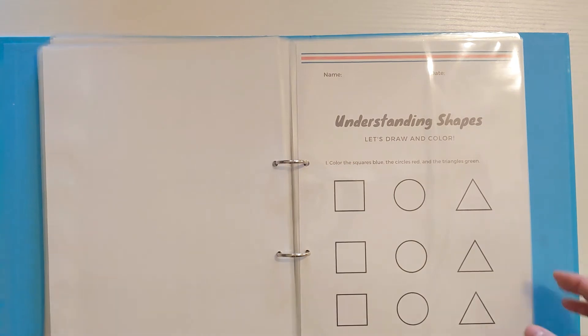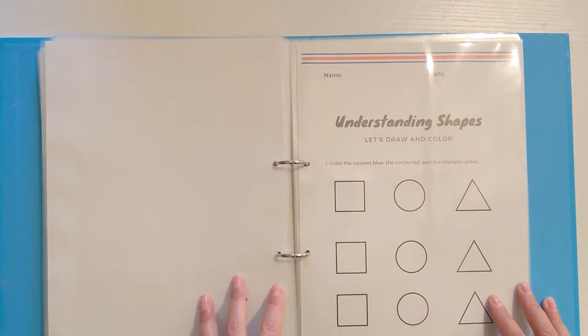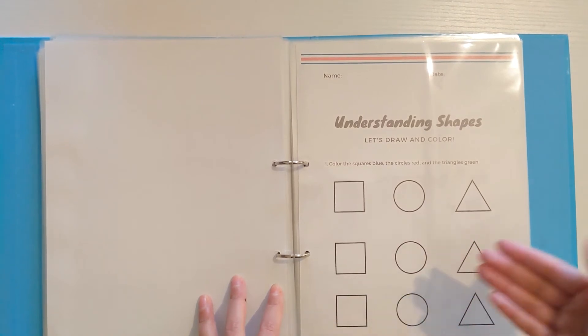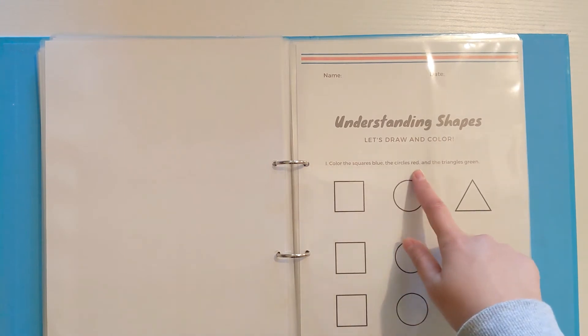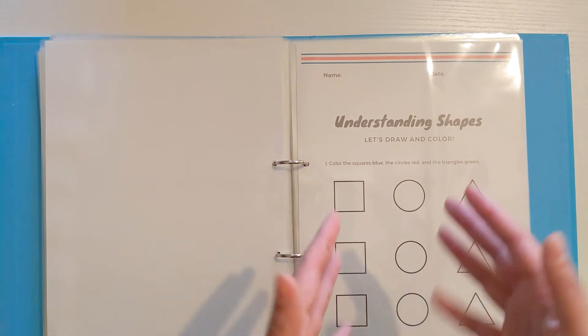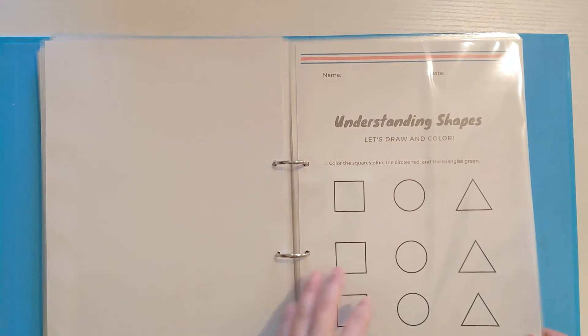Then we introduce them to shapes. Again this is part of the curriculum which they'll need to know later on in their schooling. It's a really nice fun easy way to introduce them to shapes. We've got three squares, three circles, three triangles. They've got instructions to follow. Color the squares blue, circles red, and triangles green, so that once they're finished they can see that all the squares are the same. They've got the same properties. So have the circles and so have the triangles.